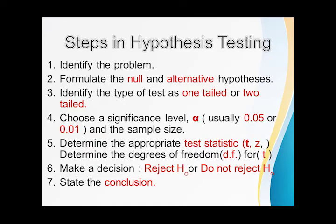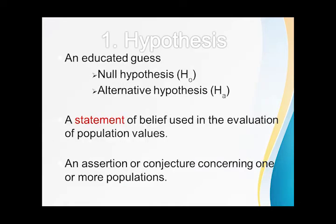Now let's discuss the steps in hypothesis testing. There are six steps, though I included identifying the problem here as a step. Step one: you formulate the null and alternative hypothesis. Step two: determine the appropriate test statistic, either t-test or z-test. You identify also the type of test as one-tailed or two-tailed. Step three: choose a significance level or your alpha and of course the sample size. Step four: identify the sampling distribution and the critical region. Determine the degrees of freedom if it is a t-test. Step five: compute for the test statistic which we will discuss in the second video. And step six: make a decision to reject your null hypothesis or not to reject your null hypothesis. Then you state your conclusion.